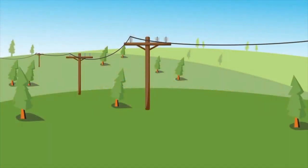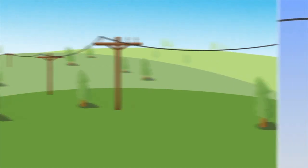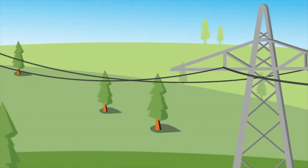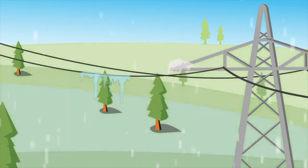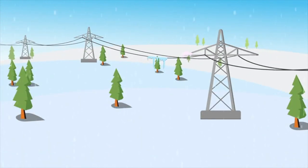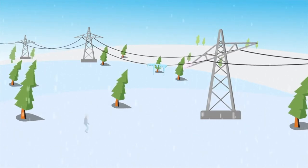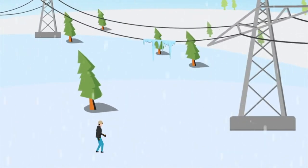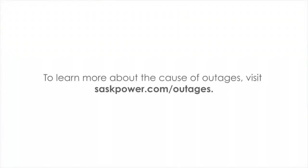When strong winds blow across power lines, they can cause them to lift and bounce — also known as galloping. This puts extra stress on the poles and crossarms, sometimes causing them to break. Galloping lines can happen in any season but are most common with a heavy buildup of freezing rain, ice or frost. Transmission lines are built to withstand galloping, but in extreme conditions even they can receive significant damage. If you see galloping lines, remember to stay clear — broken ice or equipment falling from the lines could hurt you.